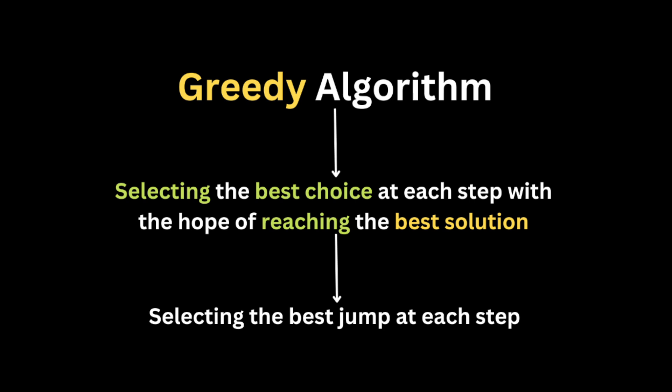To solve this problem, we're going to use a technique called the greedy algorithm. The greedy algorithm is an approach to solving a problem by selecting the best choice at each step with the hope of reaching the best solution. Here we will use it to find the minimum number of jumps needed to reach the end index of the input array by selecting the best jump at each step.